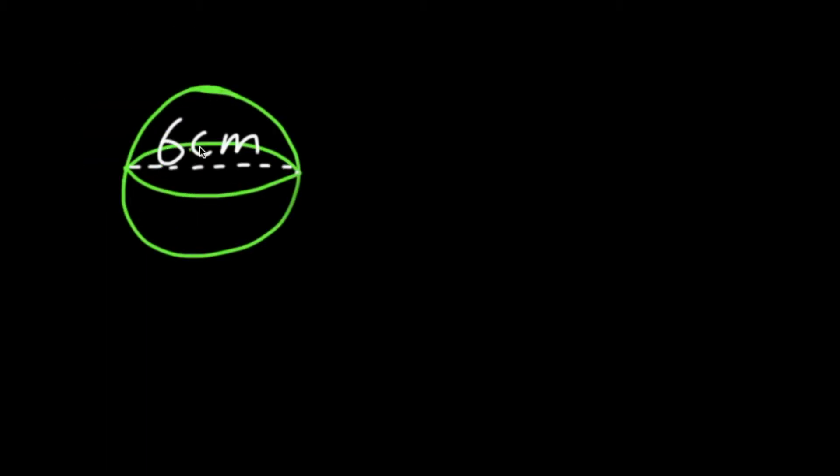As you can see in this example, we have our sphere and we have been given a diameter of 6 centimeters. Remember the diameter is from one side all the way to the other, whereas radius is from one side to the middle.